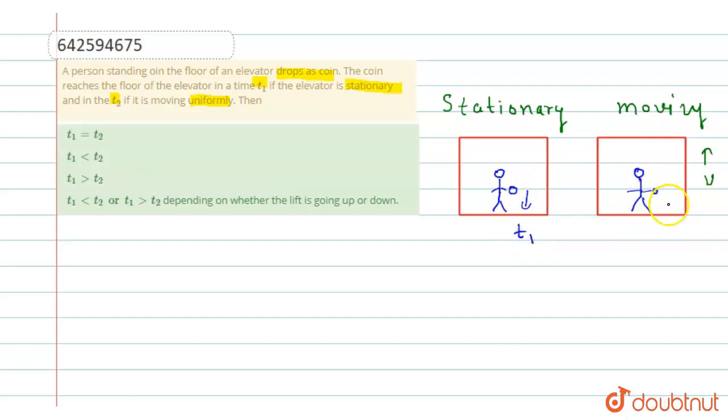And this person also drops a coin and this coin reaches the floor of the elevator in time t2. And the height of the coin, that is h, the height of the coin and the floor, that is h.